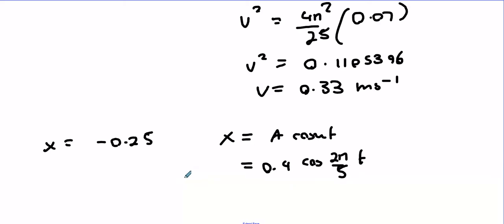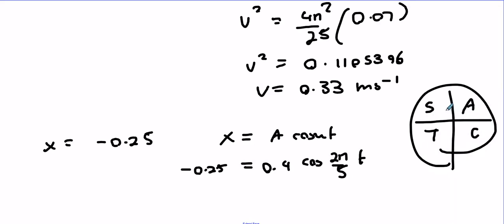Cosine is negative for the first time here and the second time here. We want the first time and it's on its way down, so it's a second quadrant rule. We're going to be in radians.